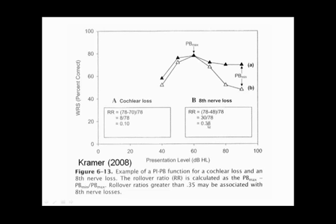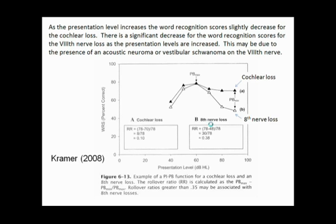If the rollover ratio result is 0.35 or greater, the patient should be referred for retrocochlear — meaning after the cochlea, i.e., nerve or brainstem — site of lesion testing. And that concludes our lecture on word recognition and quiet testing.